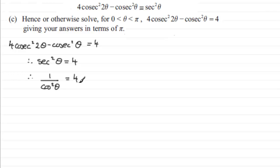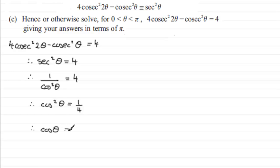I can rearrange this — multiply both sides by cos²(θ) and divide by 4 — giving cos²(θ) equals one quarter. To get cos(θ) I square root both sides, so cos(θ) equals the square root of one quarter, which is plus or minus a half. Don't forget the plus or minus when square rooting.